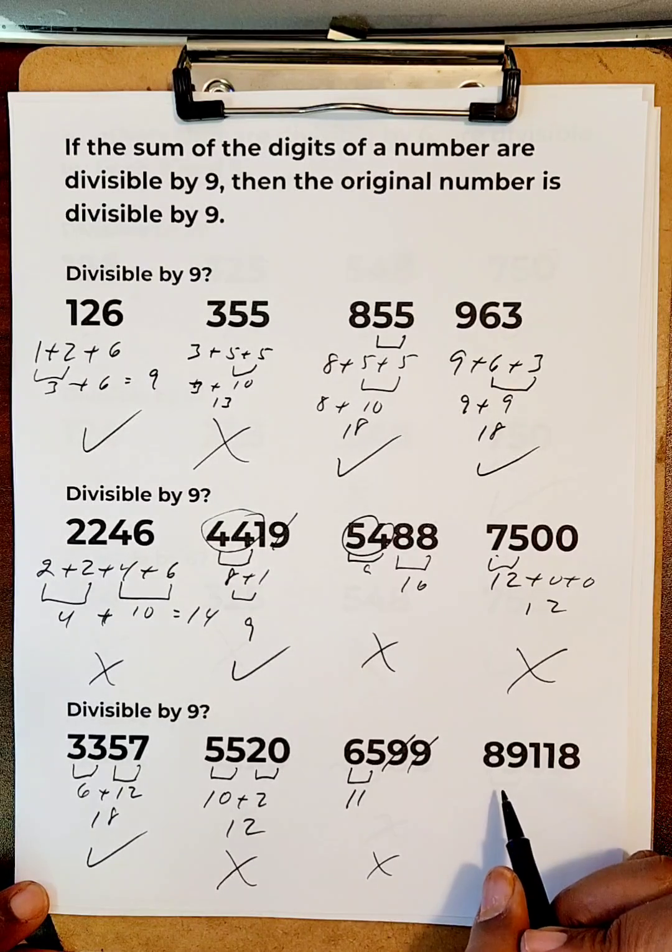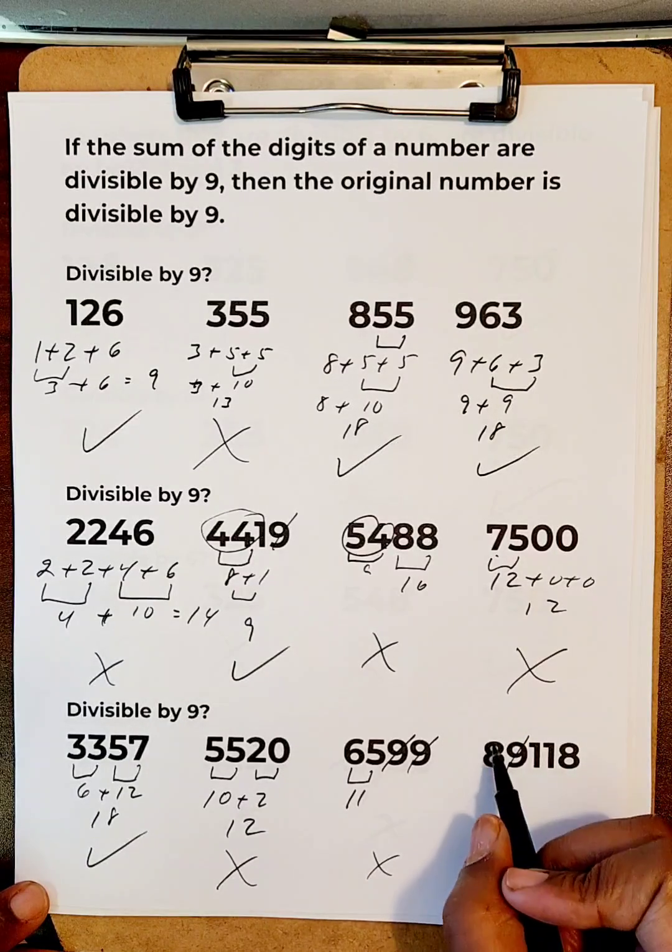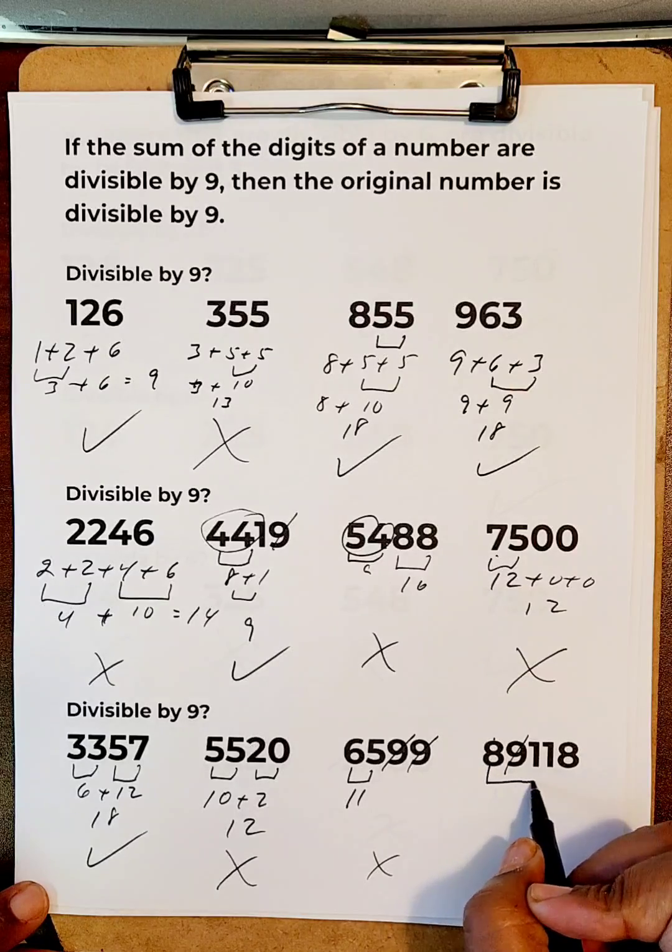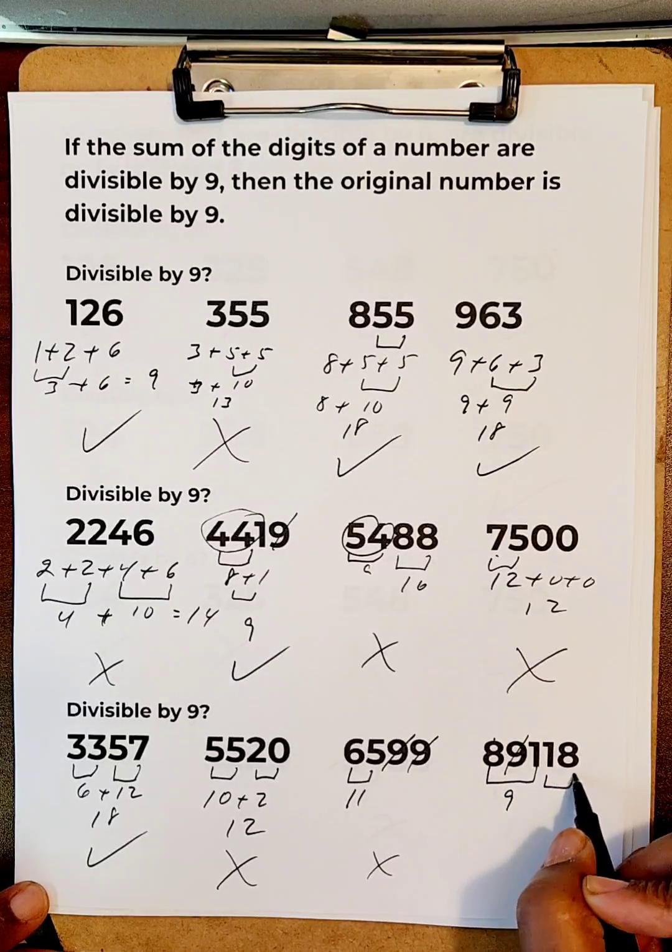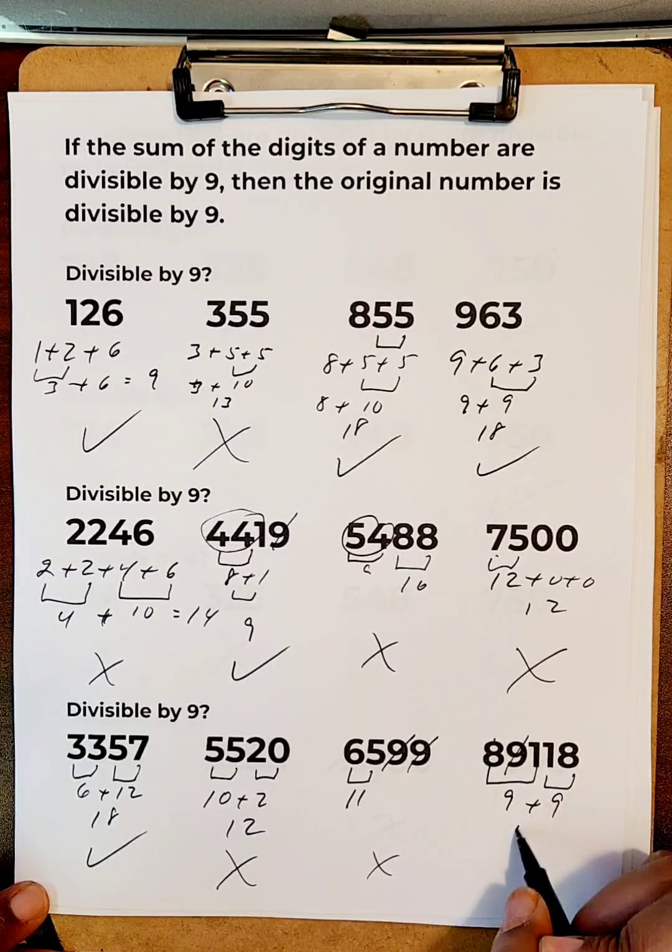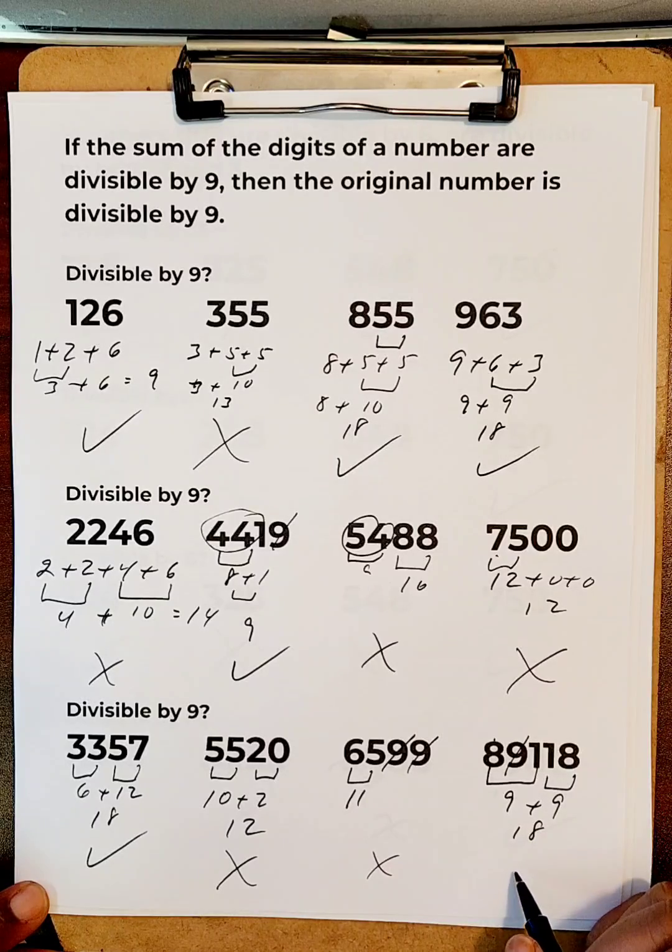Here, 9 is already in the 9 timetables. 8 and 1 is 9. 1 and 8 is 9. So, you get 18. So, that's in the 9 timetables.